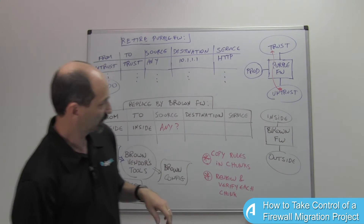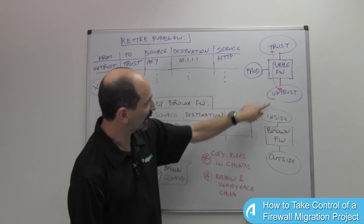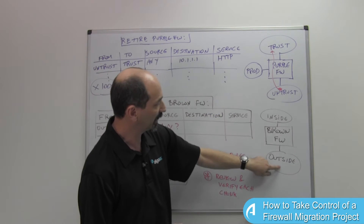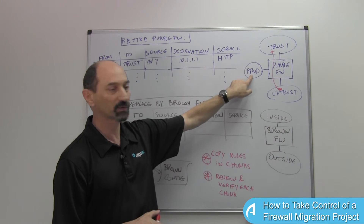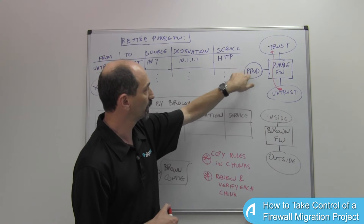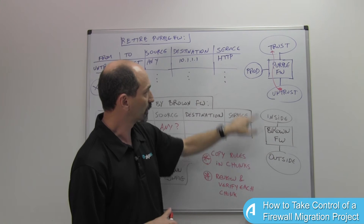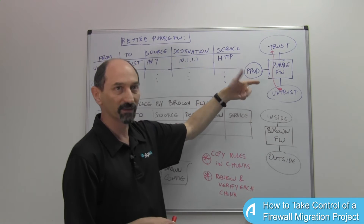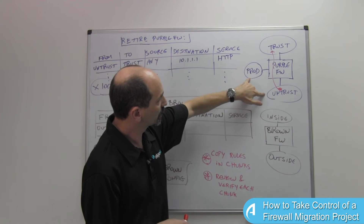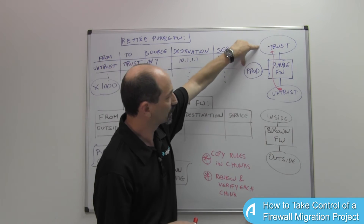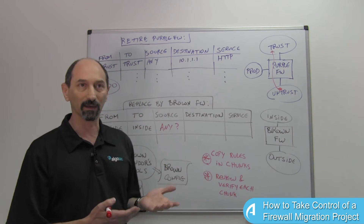That's perhaps too much. Maybe the outside over here really includes the IP addresses in what used to be called prod. Because we don't know — we haven't decided if you're merging these two zones or these two zones. So the conversion is not clear.